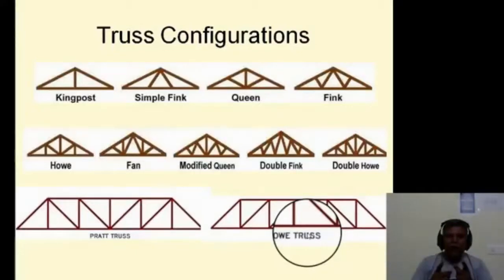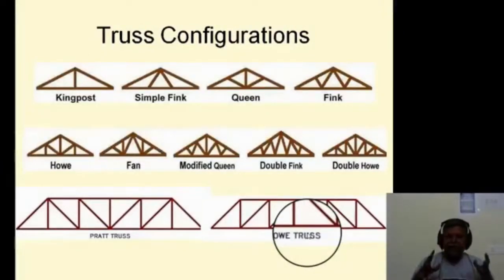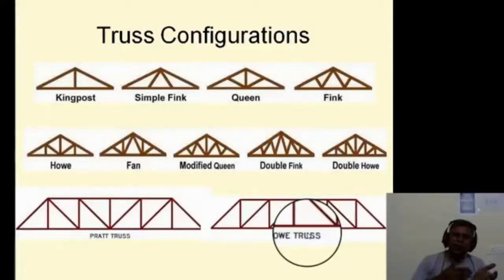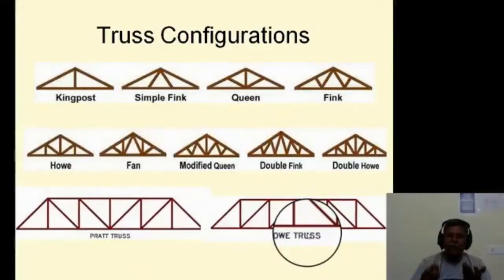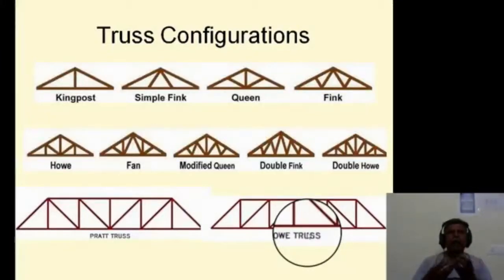What is the weight of the truss per square meter of the plan area? If you have a building of size 10m by 40m, the plan area is 400 square meters. Based on the truss configuration and plan area, you can determine the weight of the truss. You can form your own truss configuration by interconnecting triangles.